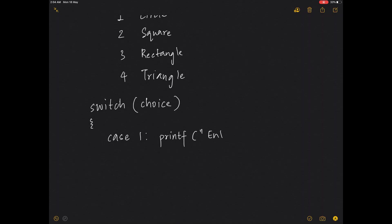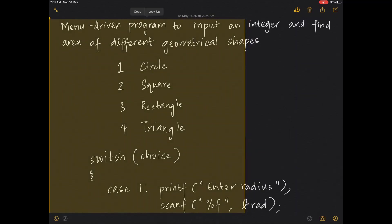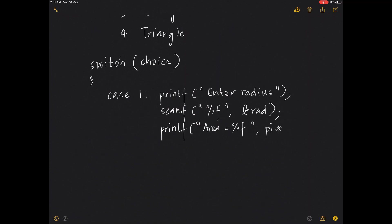In case 1, you can printf asking the user to enter the radius of the circle, then take input using scanf with %f and &radius. Then printf the area as pi * r * r. I'm going to define pi as a constant using #define pi 3.14. So the area formula is pi * r * r.